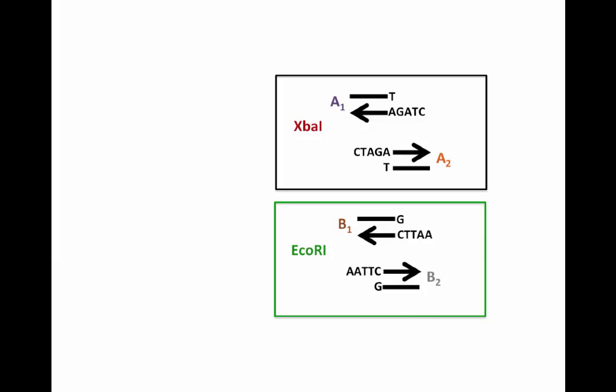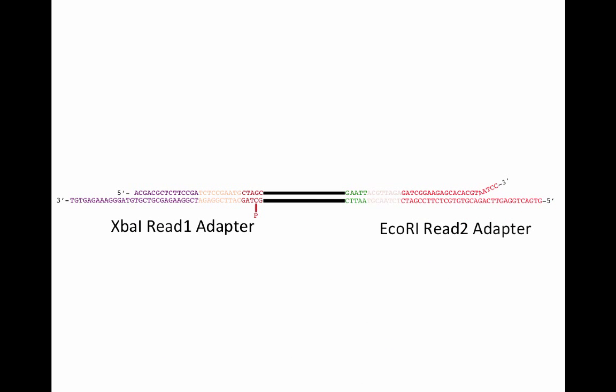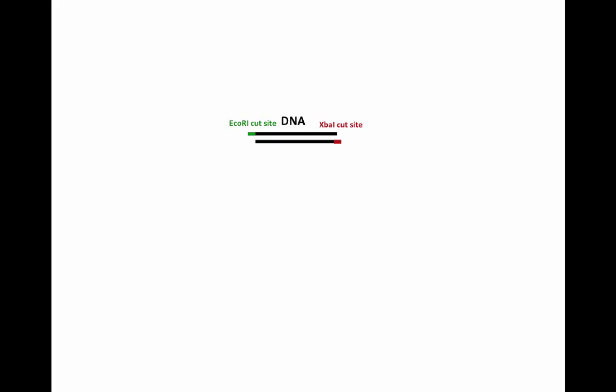We will call these molecules A1 and A2 for XbaI and B1 and B2 for EcoRI. The overhangs are the same for each enzyme but are in 2 orientations, one as a top strand overhang and the other as the bottom strand overhang. Let's take one orientation for each enzyme as an example. The READ1 and READ2 adapters are ligated onto each end. This example is showing the bases that we simply illustrated with colors previously.